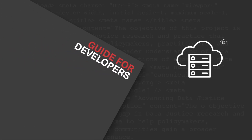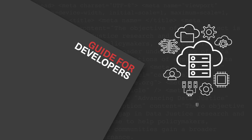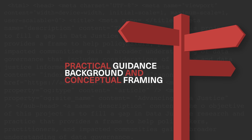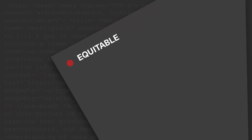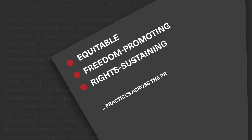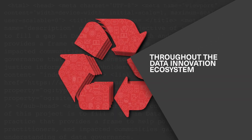The guide for developers is intended to promote an understanding of data justice among individuals and organizations who produce, procure, or use artificial intelligence, machine learning, and other data-driven technologies. The practical guidance, background, and conceptual framing contained in the guide can support developers to aim for equitable, freedom-promoting, and right-sustaining practices across their entire project life cycle and through the data innovation ecosystem.